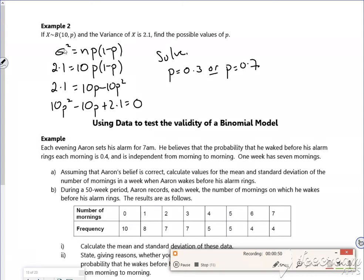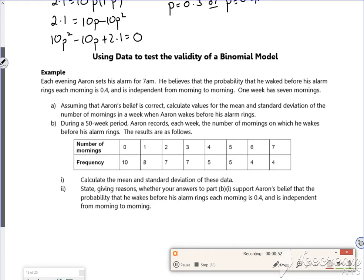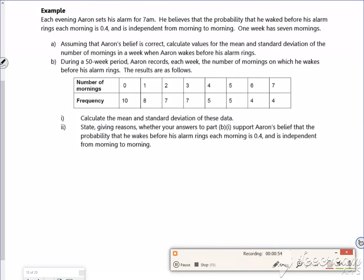Now I've got another example to have a go at. It might be a little bit too big, but we'll give it a go. Aaron sets his alarm for 7am. He believes the probability he wakes before his alarm is 0.4 and is independent. One week has seven mornings.